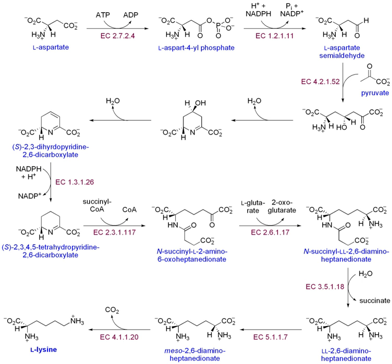Coenzymes or cofactors are molecules that assist in chemical reactions. These may be metal ions, vitamin derivatives such as NADH and acetyl-CoA, or non-vitamin derivatives such as ATP. In the case of NADH, the molecule transfers a hydrogen, whereas acetyl-CoA transfers an acetyl group, and ATP transfers a phosphate.